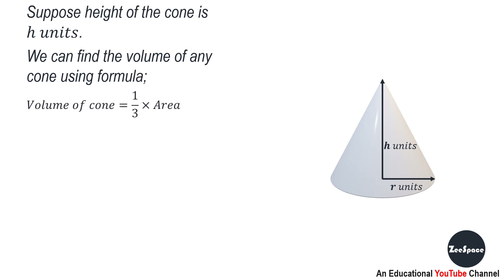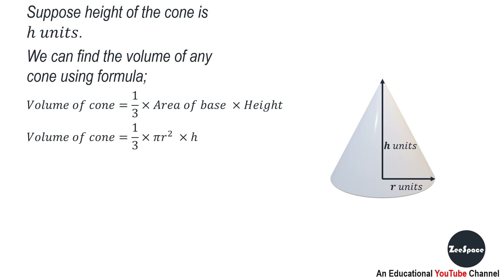We can find the volume of any cone using the formula: volume of cone equals 1/3 times area of base times height. Note that the base of the cone is circular in shape, and its area equals pi r squared. Hence, volume of cone equals 1/3 times pi r squared times h.